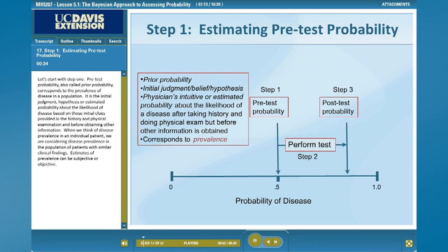Let's start with step one. Pre-test probability, also called prior probability, corresponds to the prevalence of disease in a population. It is the initial judgment, hypothesis, or estimated probability about the likelihood of disease based on the initial clues provided in the history and physical examination, and before obtaining other information. When we think of disease prevalence in an individual patient, we are considering disease prevalence in the population of patients with similar clinical findings. Estimates of prevalence can be subjective or objective.